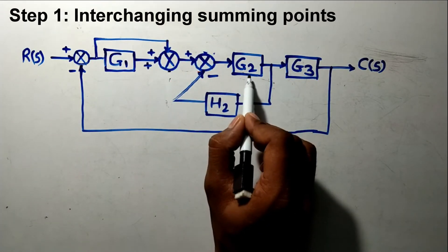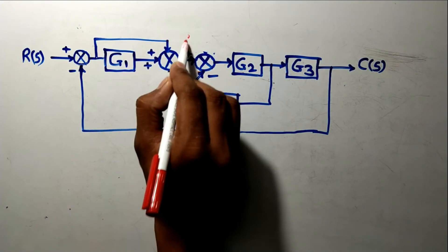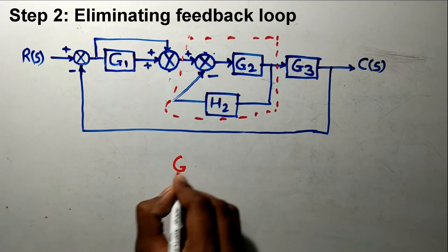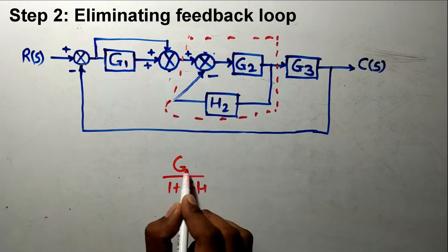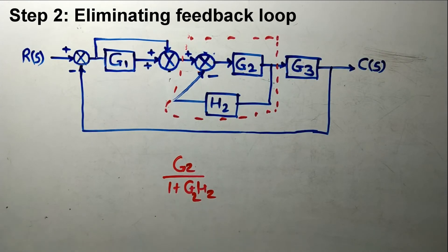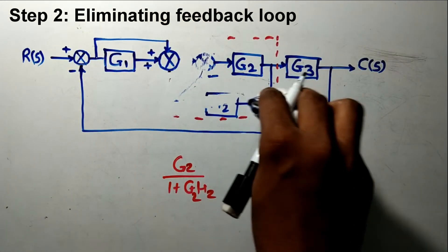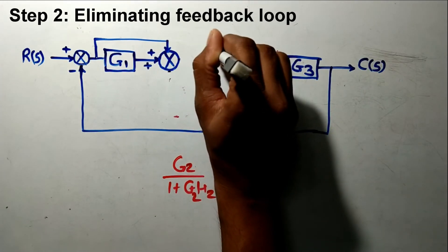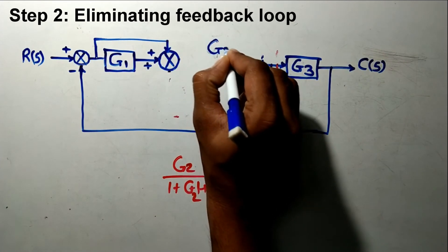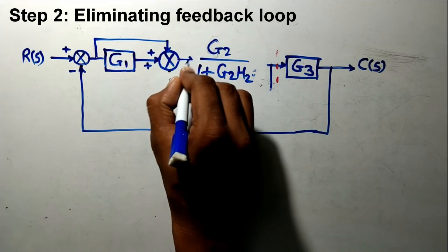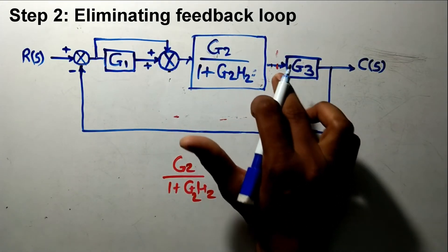You can now easily see that g2 and h2 form a feedback loop. So our step number two is to solve this feedback loop. The formula for the feedback loop is g divided by 1 plus g·h. Here, instead of g it is g2 and for h it is h2. Since this is having a negative sign, in our formula it becomes positive. I will replace this block in step number two with a single block having the corresponding transfer function. After step number two, we get the reduced block diagram.